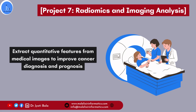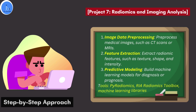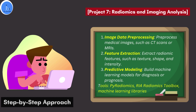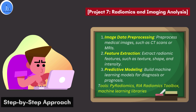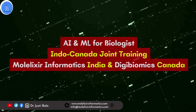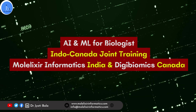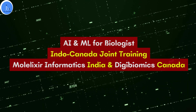Lastly, you can do radiomic and imaging analysis — extract quantitative features from medical images to improve cancer diagnosis and prognosis. AI and machine learning can also be integrated here. Start with image data pre-processing on medical images such as CT scans or MRIs, then perform feature extraction to extract radiomic features such as texture, shape, and intensity. Based on those, build a machine learning model for diagnosis or prognosis. We at Molex Informatics, along with our collaborator DigiBiomic Canada, provide such AI and ML based projects and training.